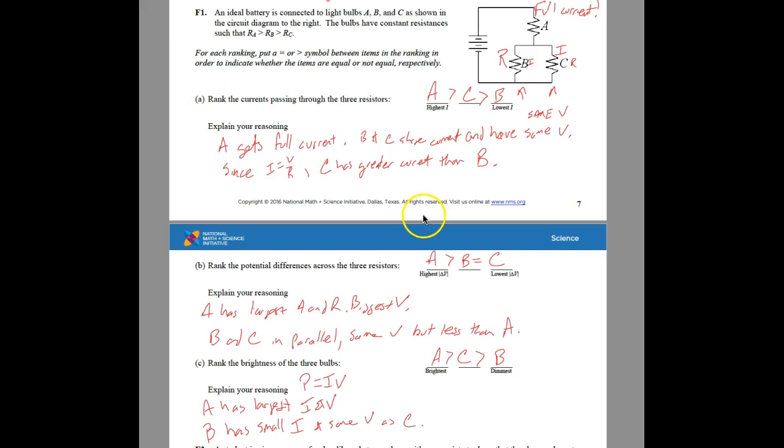They want us to rank the potential differences across the three resistors. We know this one's going to get part of that voltage, and then these two get the same. Because of the loop rule, this one has such a big resistance, it's going to have more of that voltage or potential.